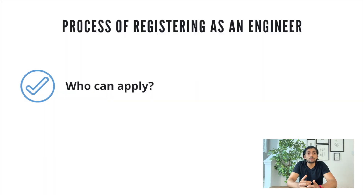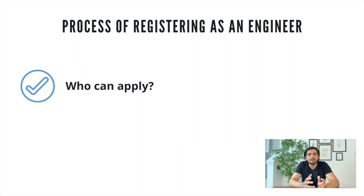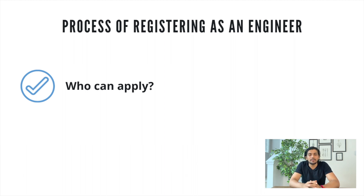Now, what is the process of registering yourself? The first thing is to find the governing body of your province, because you need to register yourself in the province in which you are operating. For example, if you are living in British Columbia, you need to register yourself in BC as a professional engineer.